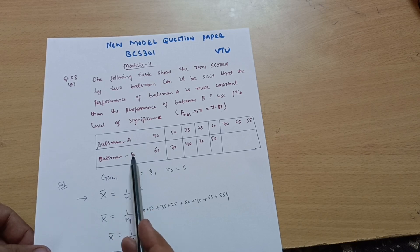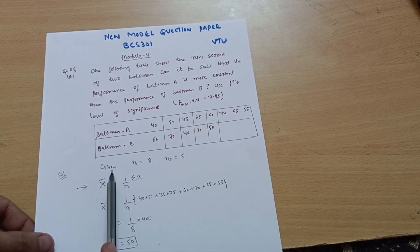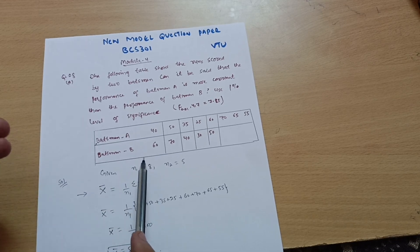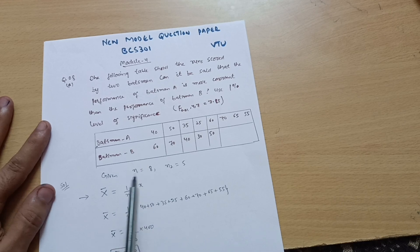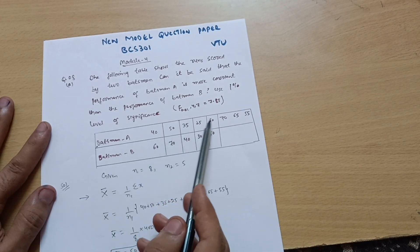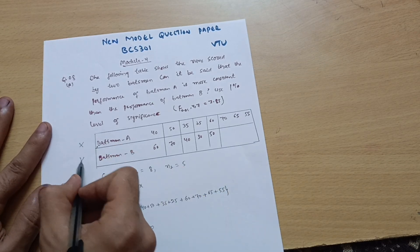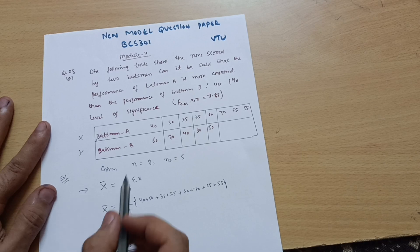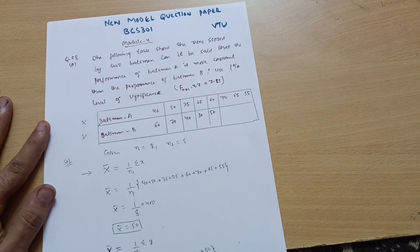You can assume batsman A is Rohit Sharma and batsman B is Ishan Kishan. While writing the solution, write down the given data. In this problem there are two tables, so we have n1 equal to 8 samples for batsman A (labeled X), and n2 equal to 5 samples for batsman B (labeled Y).